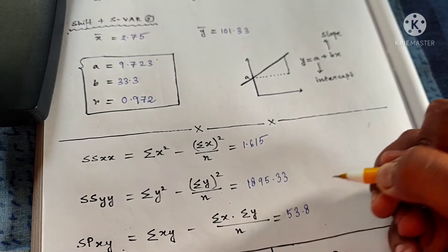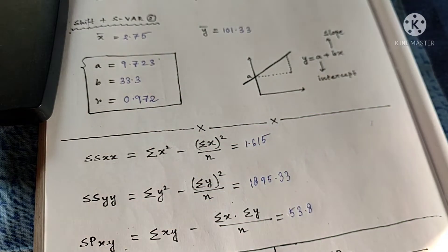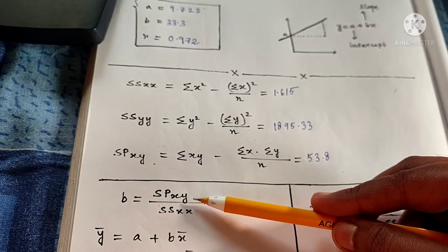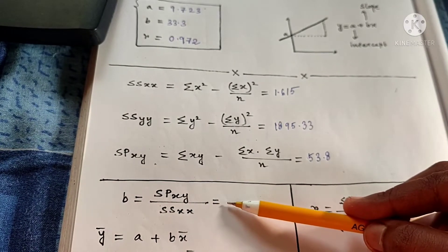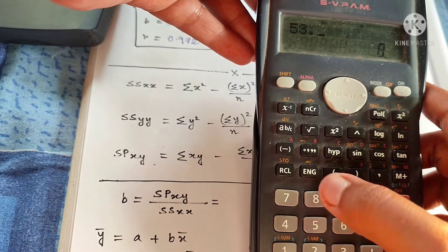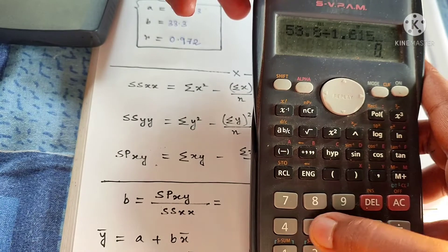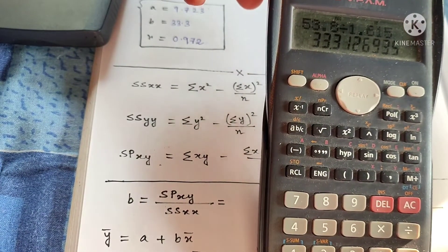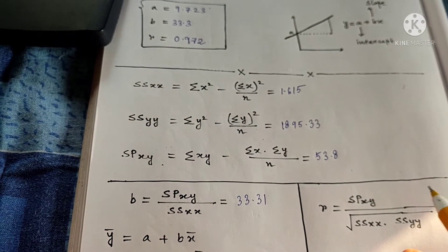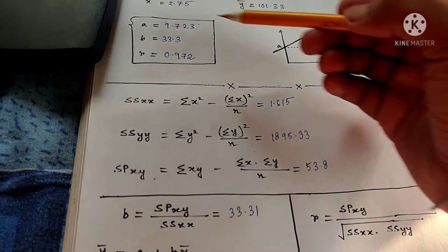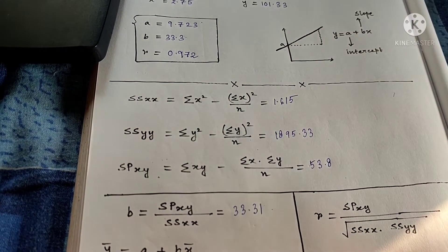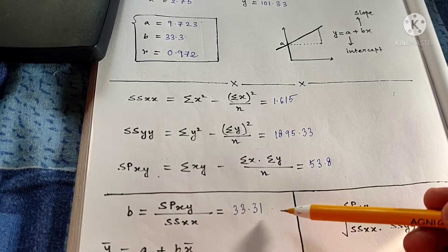Now you have got all three values. Using these, you need to find out the value of B. The value of B equals SP_xy divided by SS_xx. So SP_xy equals 53.8 divided by 1.615, which becomes 33.31. Let's see if this value matches with the previously calculated value from the calculator — yes, B equals 33.3, and you have also found it here as B equals 33.3. So from this, you can get assured that you are doing the solution correctly.